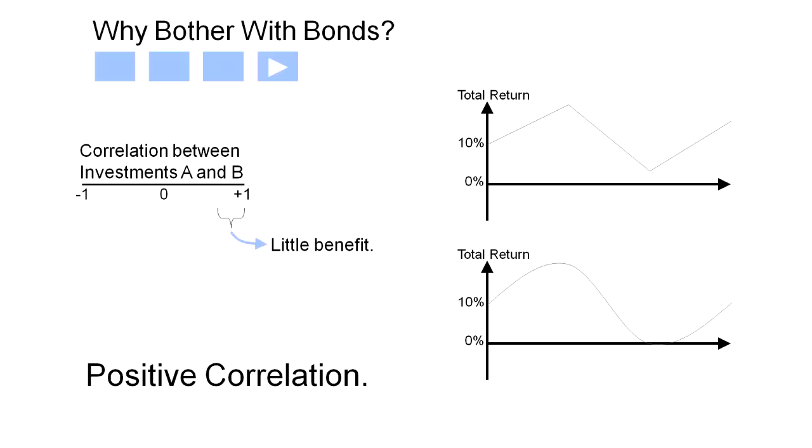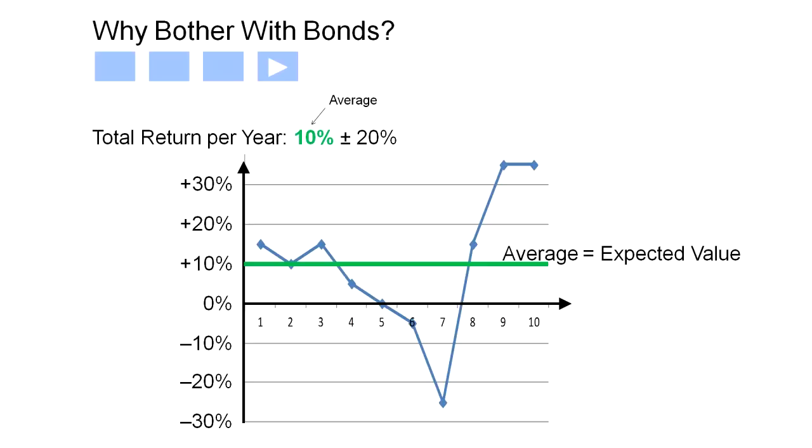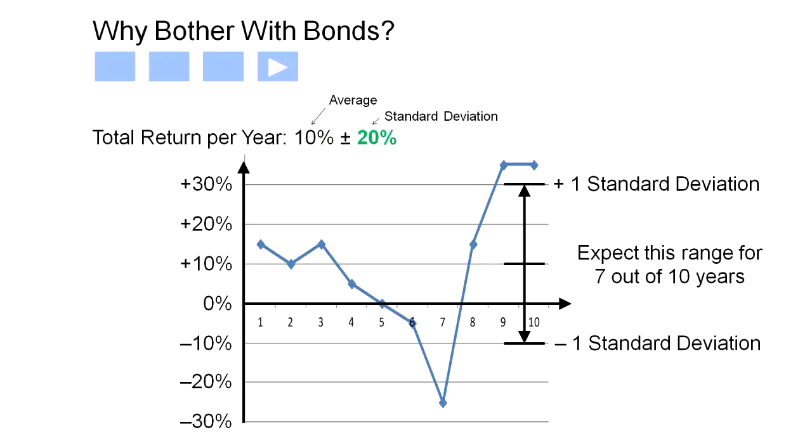Now, before we can get to the magic I've promised, we need to introduce one more thing. We need a way to describe the volatility of these returns. The average annual return is the expected value. It's useful and valuable, but it doesn't indicate the volatility. So we use this measure called standard deviation to describe the distribution of returns.